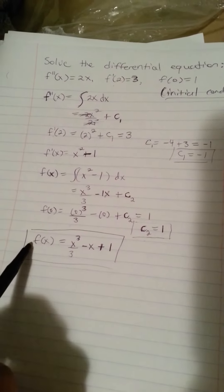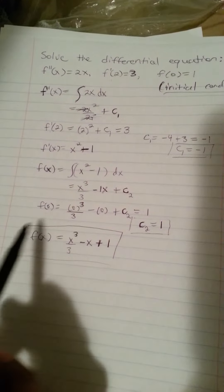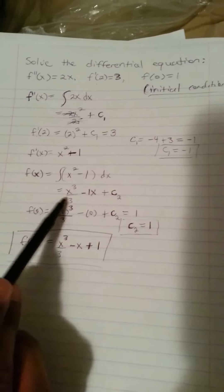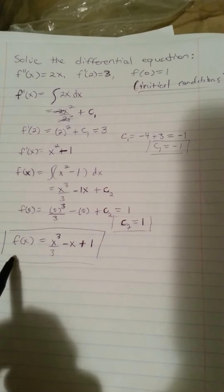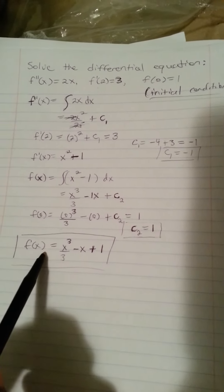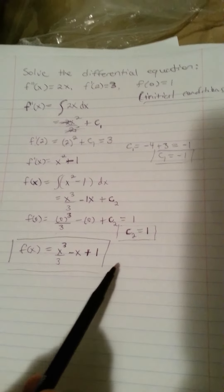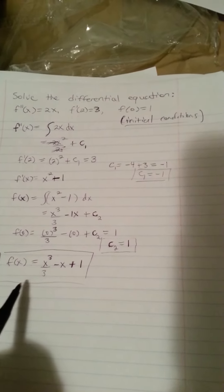So now with all this done, I'll be able to come back here and finally find the differential equation. So plugging in everything back into the end right here, we have f of x is equal to x cubed over 3 minus x plus 1, and that is the differential equation.